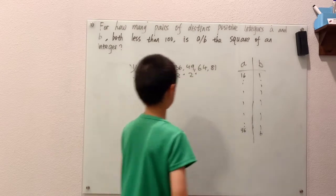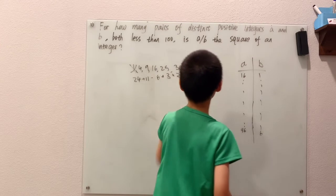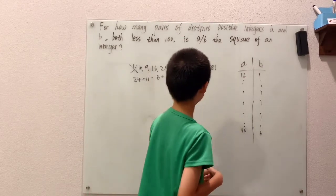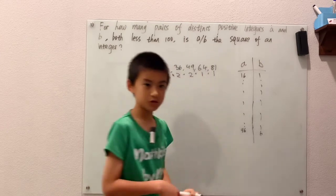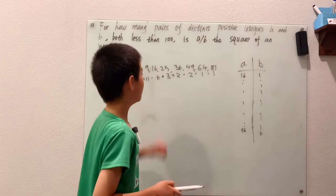And if you double 64 you go way over 100, like 128. But in other words, it's just 64 and 1. And for 81 it's not hard to know there's just one choice for that, 81 and 1, since if you double that you get something close to 200, not 100.